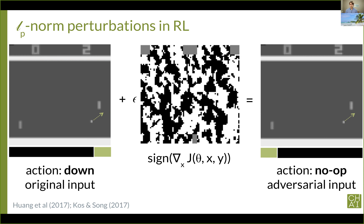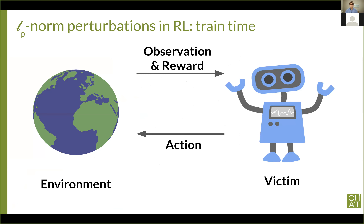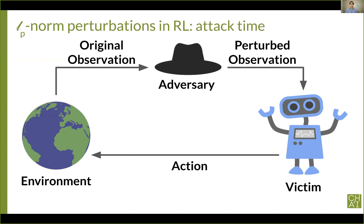Let's look at the threat model used in prior work in more detail. The victim policy is trained in the environment without any adversaries. The agent takes actions, receiving observations and reward from the environment — a standard POMDP. At attack time, an adversary is introduced that sees the original observation and can add a small LP norm modification to it. The perturbed observation is then input to the victim. Typically the victim is white box, but black box attacks have also had some success.